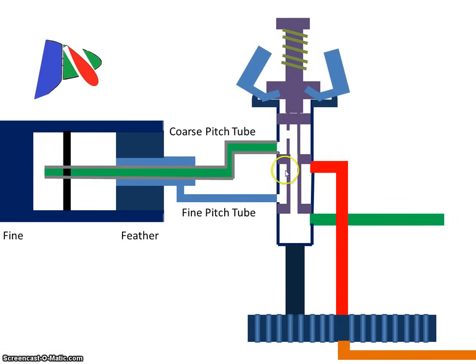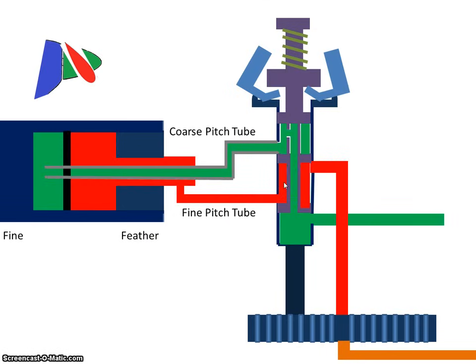The pressure oil now is diverted through the fine pitch tube. So oil comes through this tube and that's going to act on the piston. That's going to cause the piston to move back. As it moves back, the oil is returned through the coarse pitch tube and back to the engine sump.